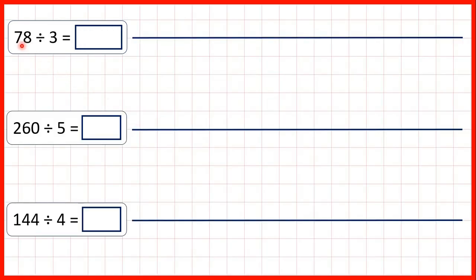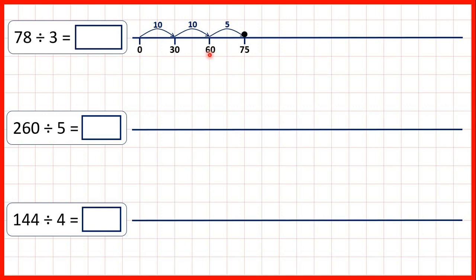Now let's look at a quicker way to divide by chunking. For 78 divided by 3, we start the same way — jumping 10 times 3 to get to 30, then another 10 times 3 to get to 60. But now you might know that 5 times 3 is 15, so if we jump 5 times 3 we add 15 to 60, taking us to 75. Then we just need one more jump to reach 78. So that's 10, 20, 25, 26 jumps altogether.